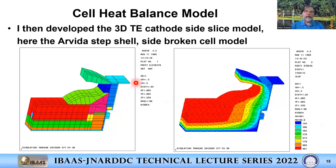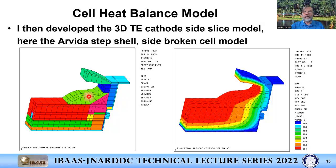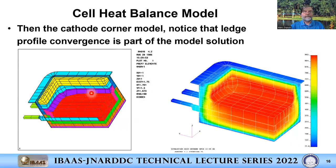After developing the anode model, I developed the cathode. I'm presenting an example from 1989 — a side-break cell (not a point feeder), operating at only 50 to 70 kilo-amps. What's unique about this model is that the ledge shape is computed as part of the solution. And here is my very first cathode quarter model, developed in 1986, with a solution post-processed with the code called Patran.